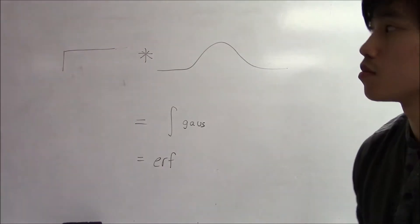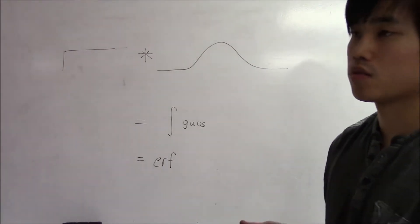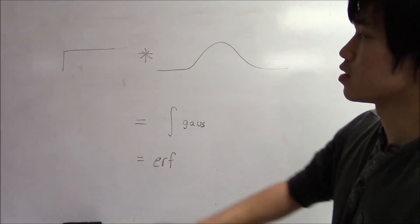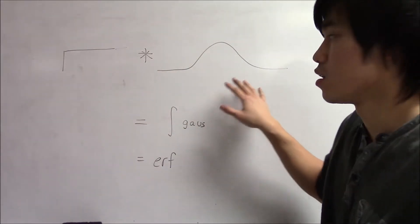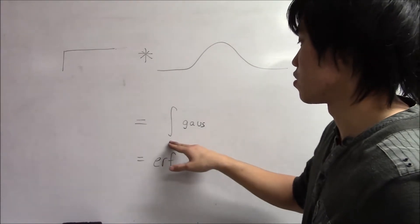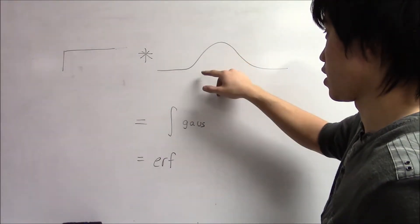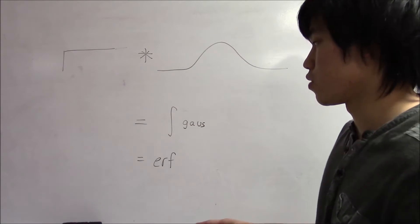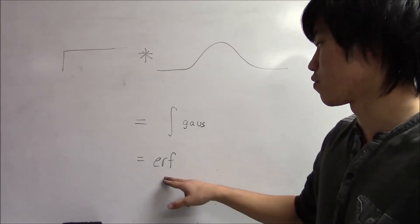The math behind this experiment is while we're moving the razor blade across the beam, we're basically taking a step function and convolving it with a Gaussian function. And that will give us, because we're convolving with a step function, the integral of that Gaussian as we select each section of the Gaussian and add them up. We then find that it's very similar to the error function.